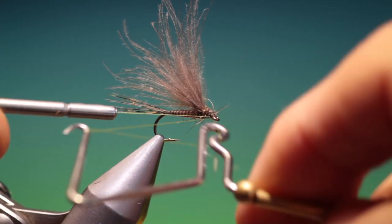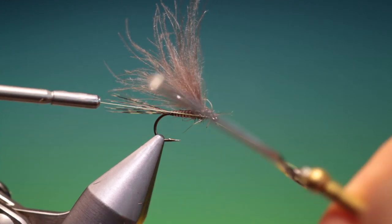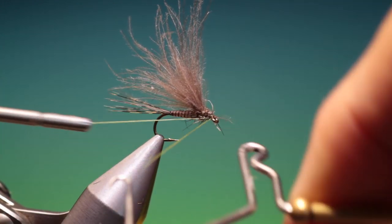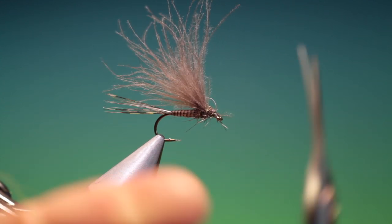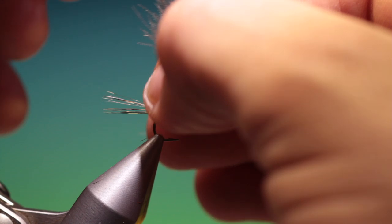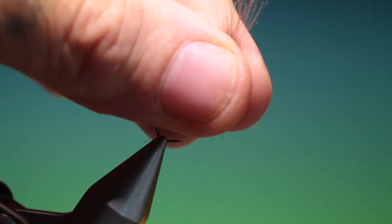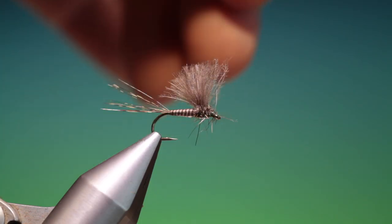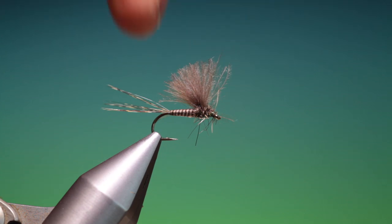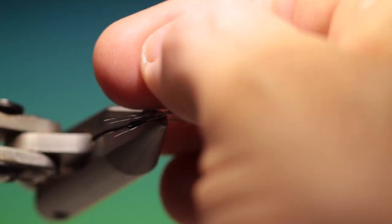Give it a whip finish. Remove our tying thread. Pull the wing up. That's it, that's the quick quill done.